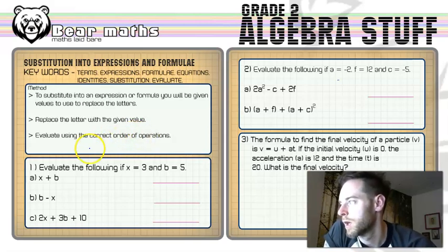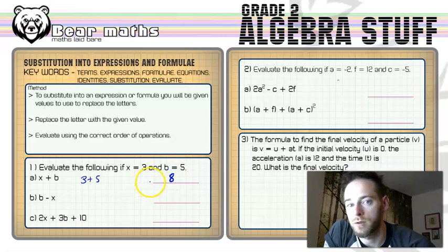Now in question number one, part A, we've got the most simple of all questions. If x equals 3 and b equals 5, we are going to do 3 plus 5. Substituted the x for a 3 and substituted the b for a 5, and everybody will be able to do that question, no problem at all.